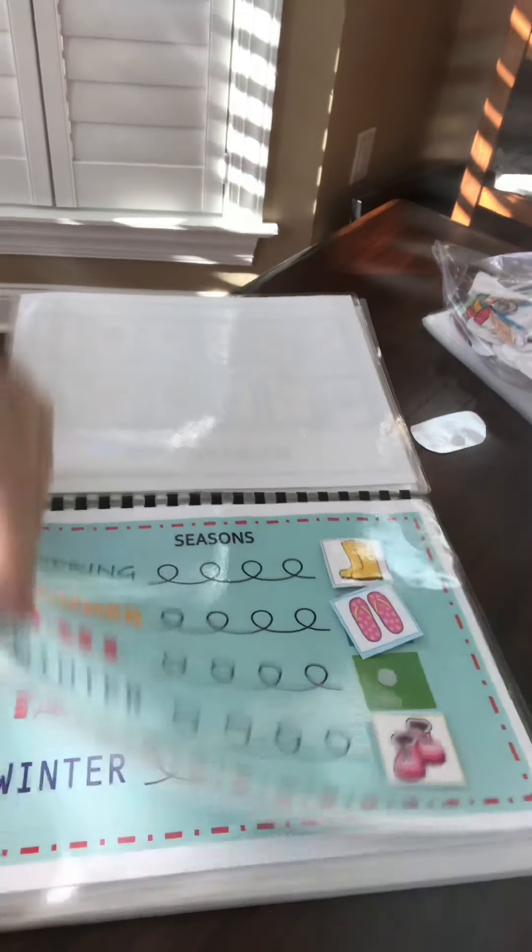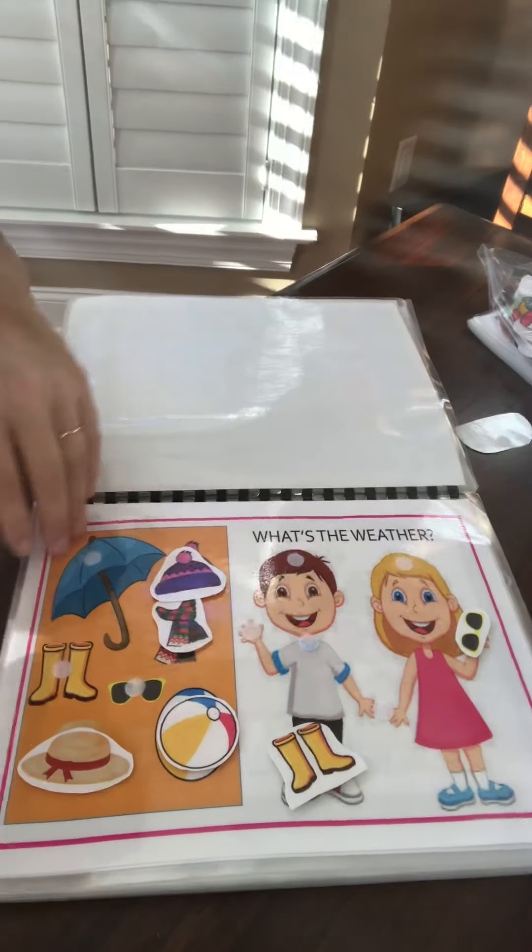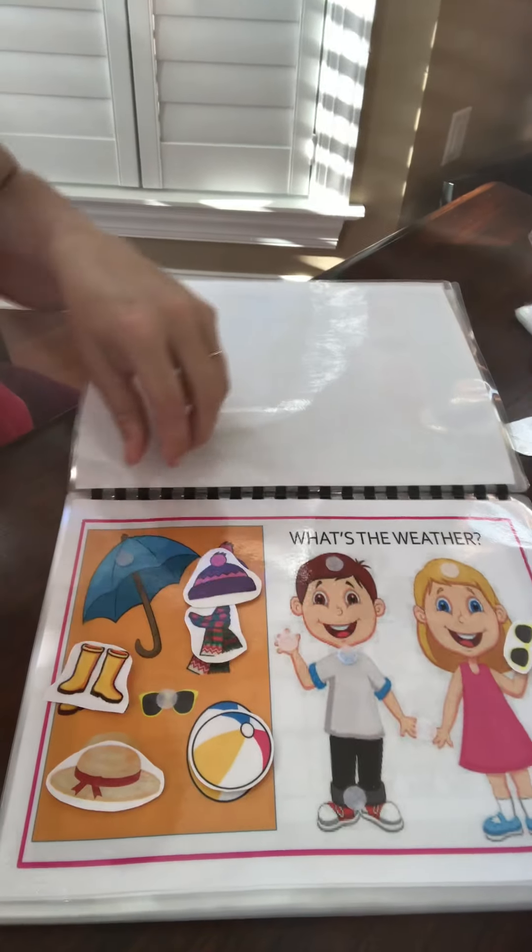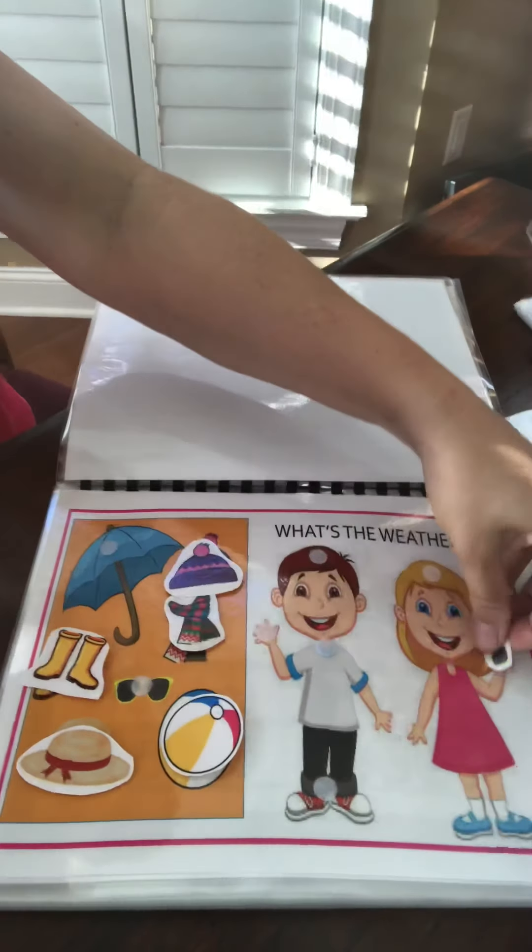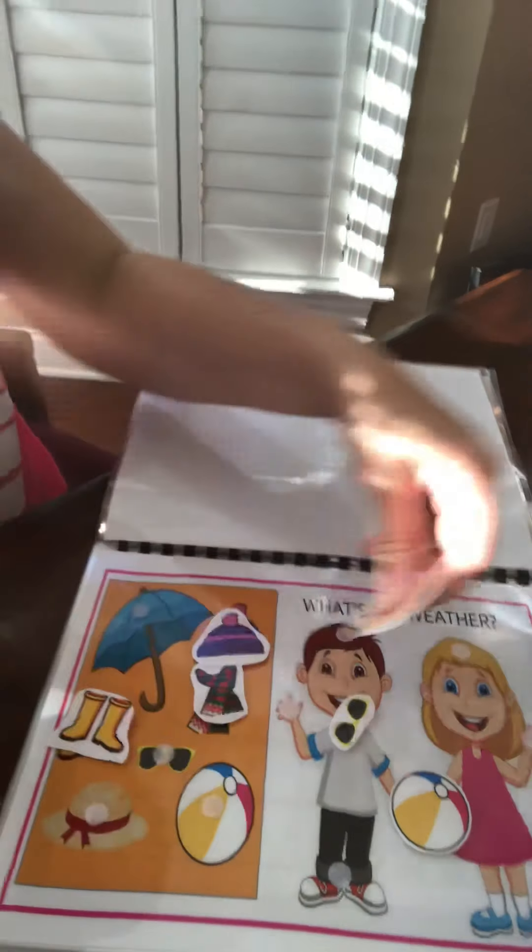So, it's fall, and this is just a cute activity, what is the weather today? So, it's sunny outside today, so we're going to get our sunglasses, and we're going to get our beach ball, and maybe put on our summer hat.